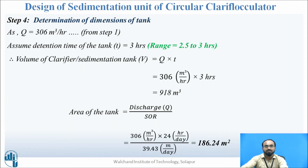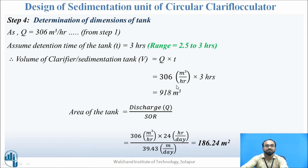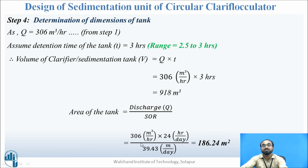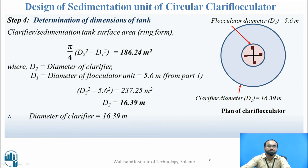Now we calculate dimensions. Q = 306 m³/hr, detention time assumed as 3 hours. Volume = Q × t = 306 × 3 = 918 m³. Area = Q / SOR = (306 × 24) / 39.43 = 186.24 m². Since this is the total area of the clarifier ring, we subtract the flocculator area.